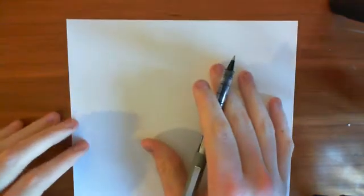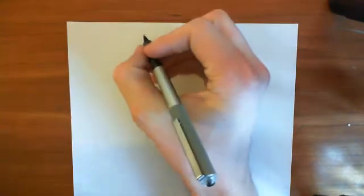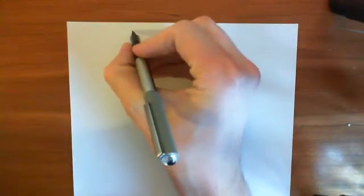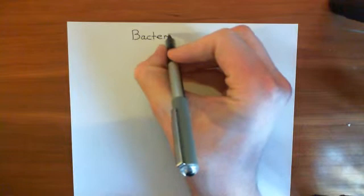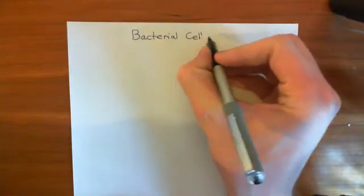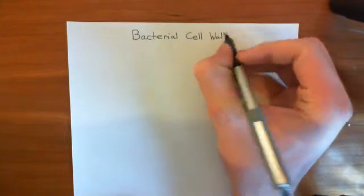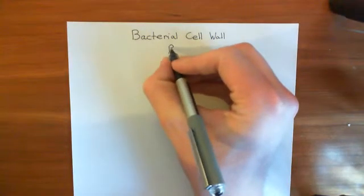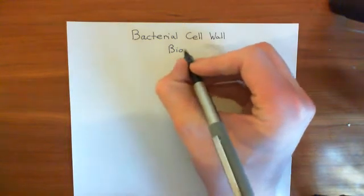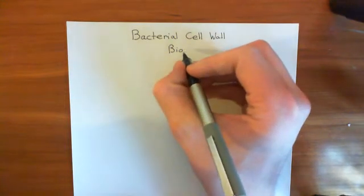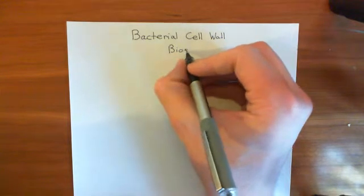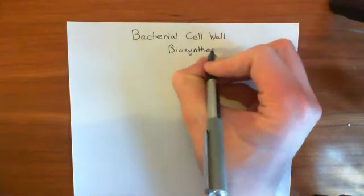Welcome to this next video in the playlist on antibiotics and antibiotic resistance. In this video, we're going to look at antibiotics which target bacterial cell wall biosynthesis. We are going to look in detail at the bacterial cell wall biosynthesis process, and we're going to see where certain pharmaceutical agents — hugely used ones — work to block this bacterial cell wall biosynthesis.